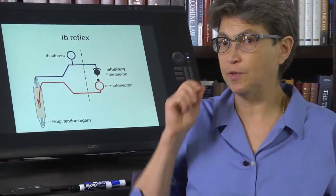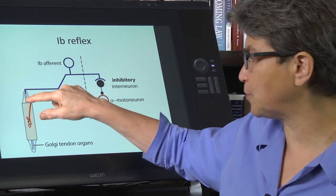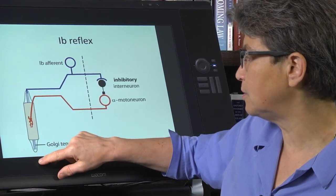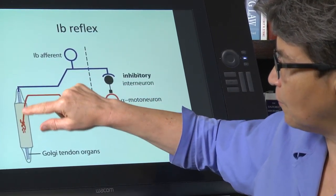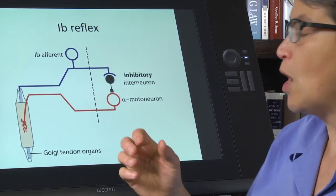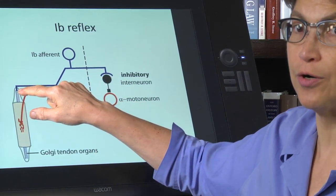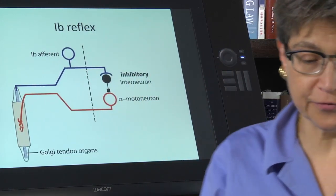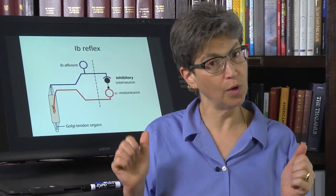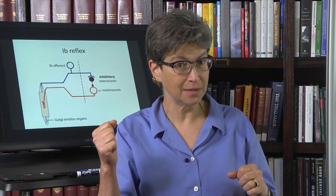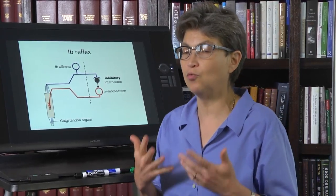The information for the 1b reflex does not come from muscle spindles or intrafusal fibers. Instead it comes from 1b afferents, which are wrapped around the Golgi tendon organs at the attachment of the muscle. During an active contraction, these 1b afferents are excited — so unlike the stretch reflex, which is triggered by a passive load, the 1b reflex is triggered by active muscle excitement.